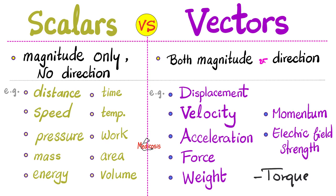Acceleration — why is acceleration a vector? Because it has a direction. It could have a positive direction or a negative direction, because you can accelerate or decelerate. If you're accelerating, you'll have a positive sign; if you're decelerating, you'll have a negative sign. If I start driving from parked and accelerate until I reach a stable speed, then decelerate to a complete stop — acceleration has a direction, which means it's a vector.